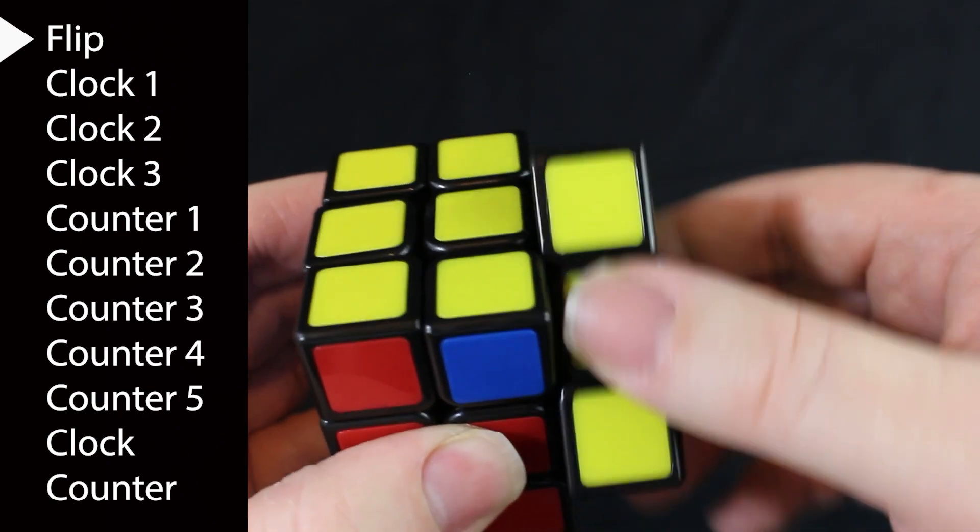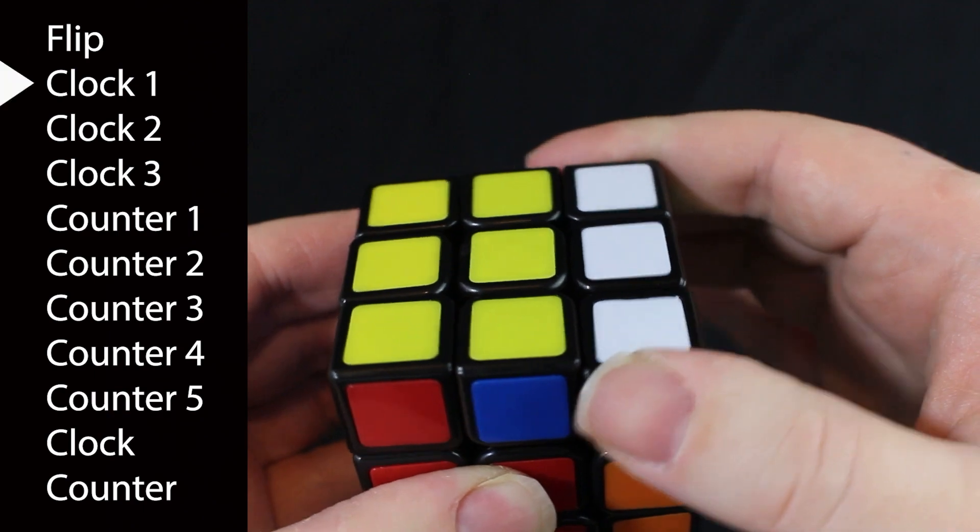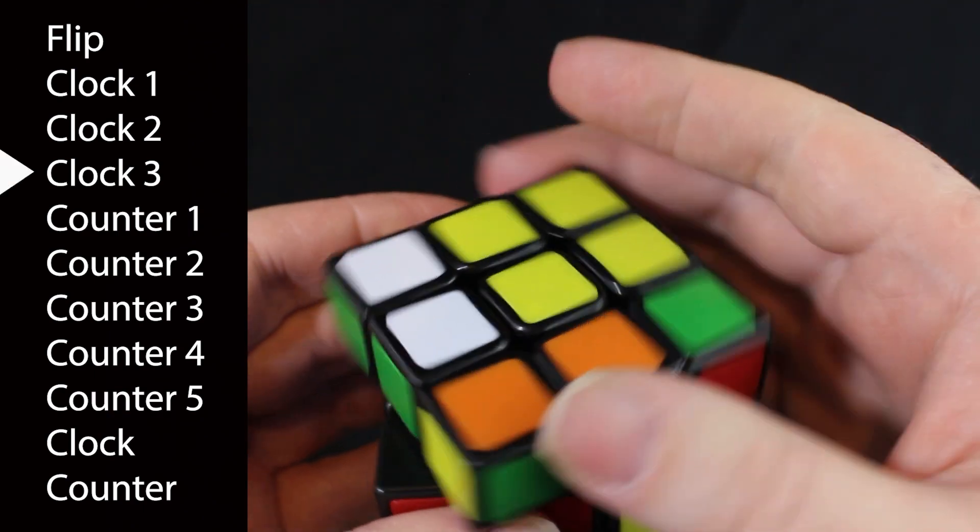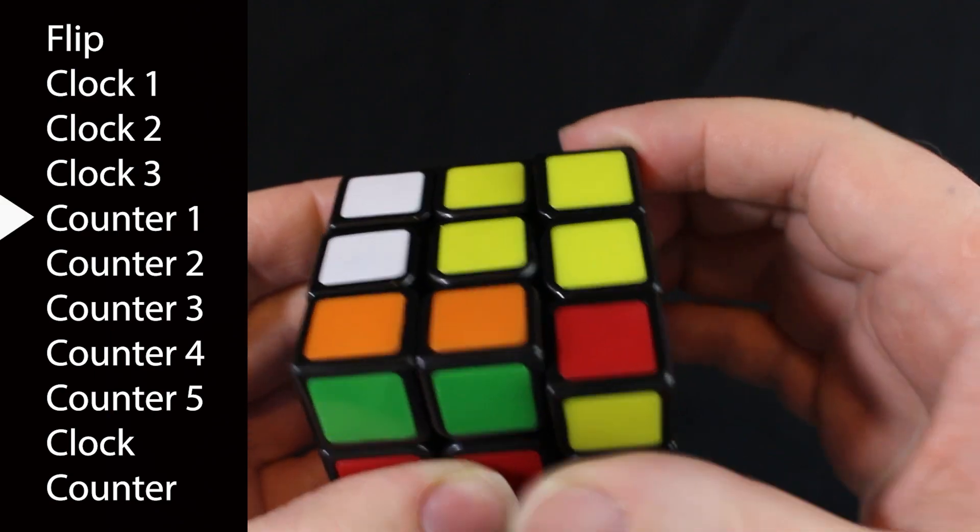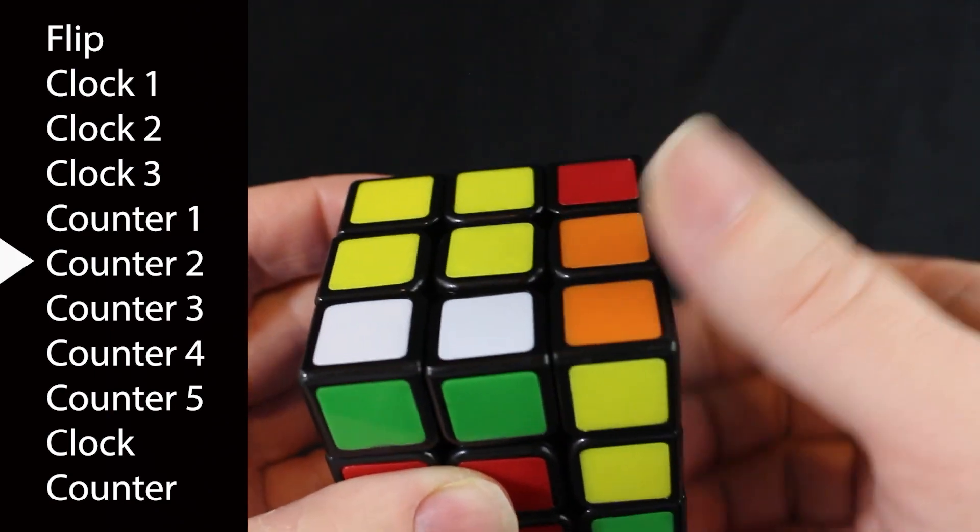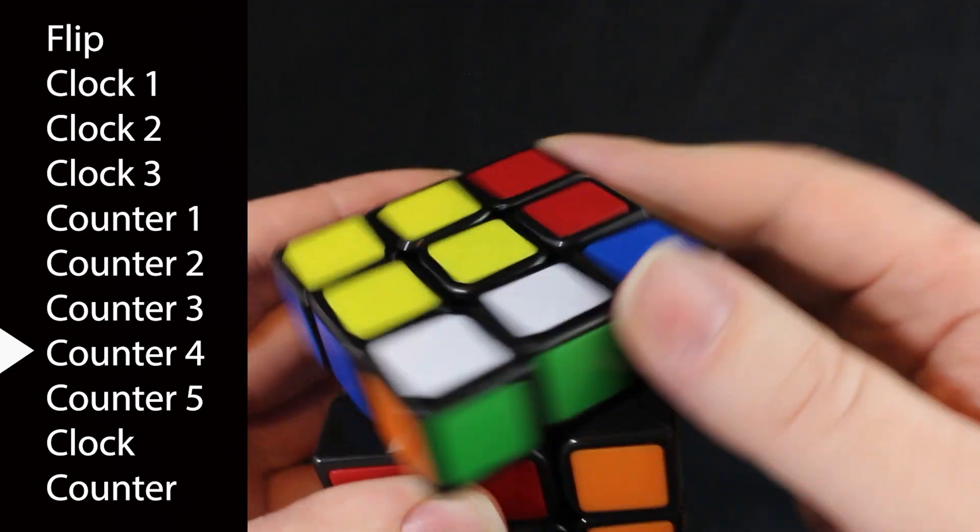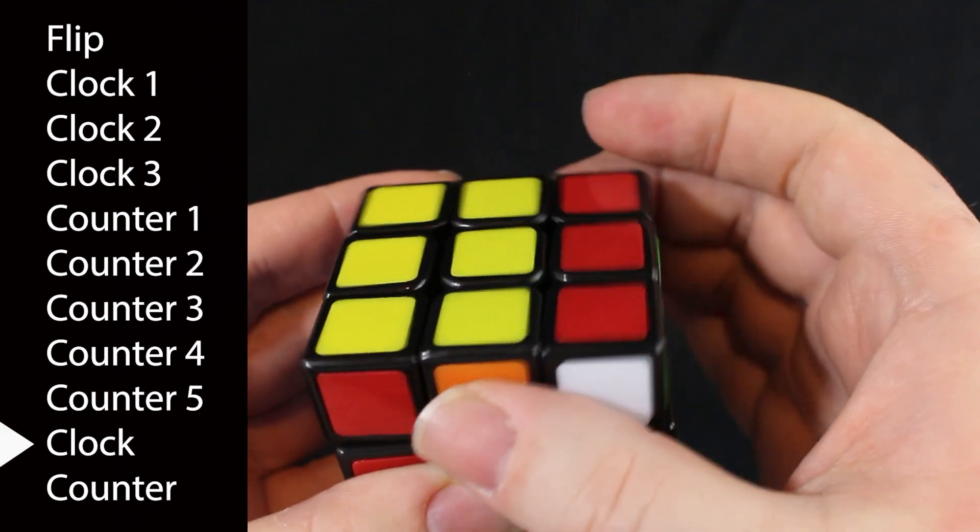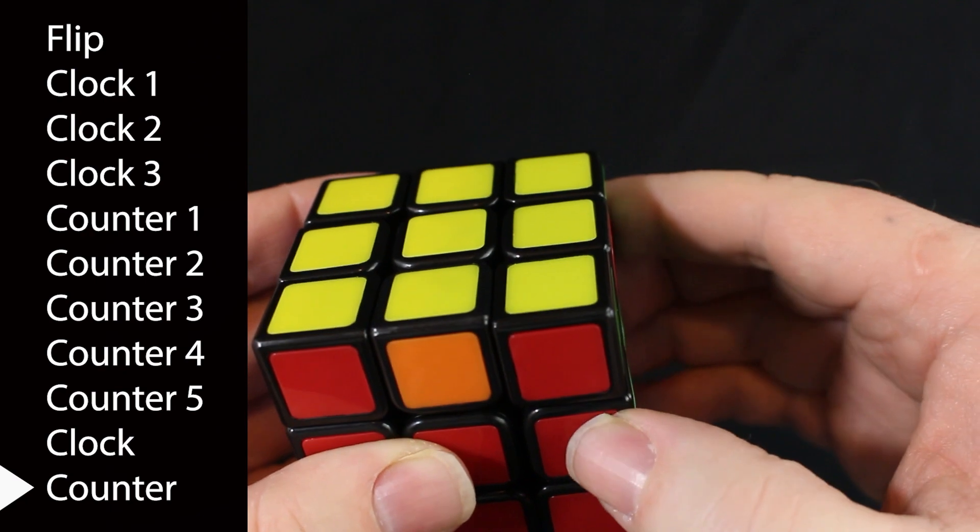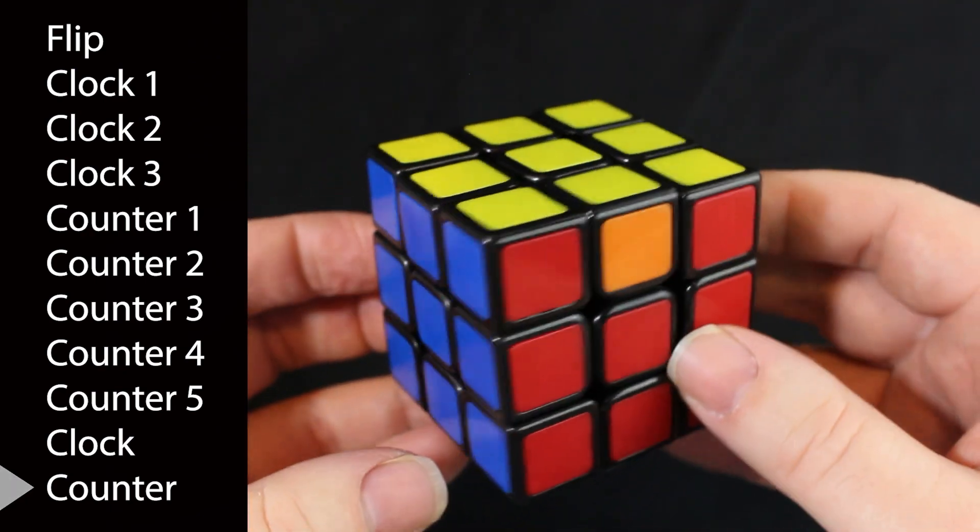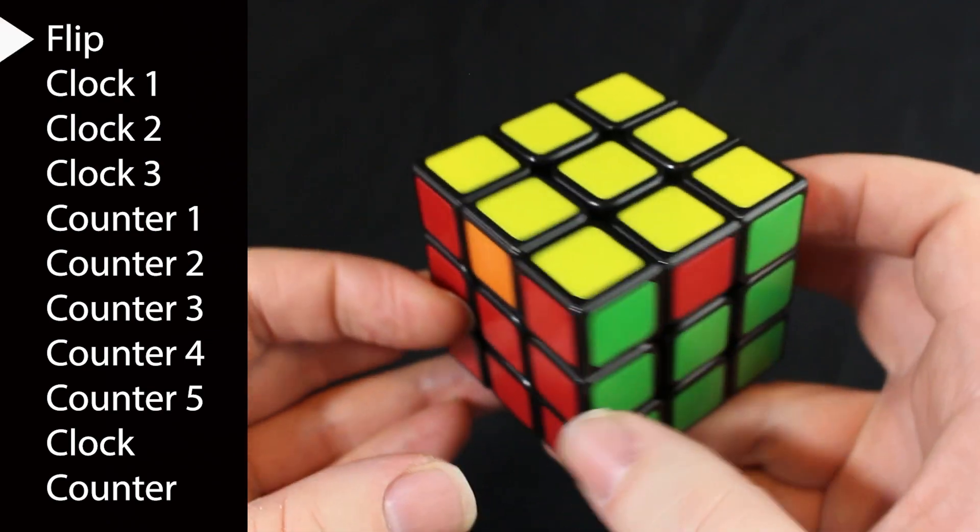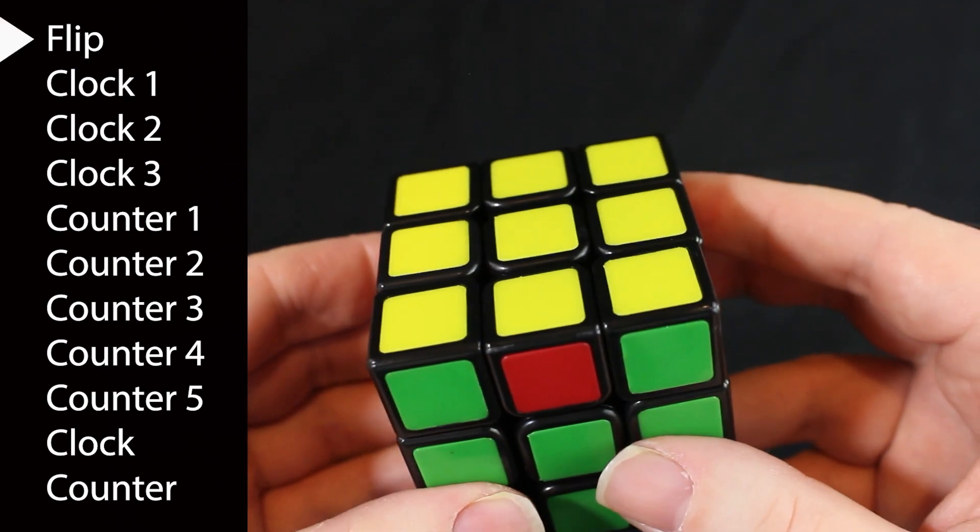Starting with the right, flip, clock one, clock two, clock three, counter one, counter two, counter three, counter four, counter five, clock, counter. Let's see what happened. Now we have a most completed side, this blue side, move the blue side to the back and then we do the moves again.